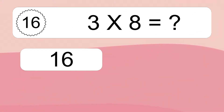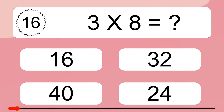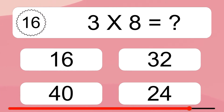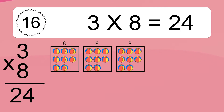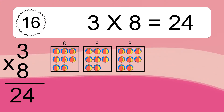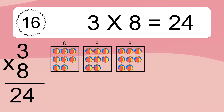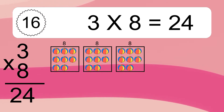3 times 8 equals what? 3 times 8 equals 24. We have 3 boxes and each box has 8 colorful balls inside. If you count all the balls in all the boxes together, you will have 3 times 8 balls. This equals 24 balls.